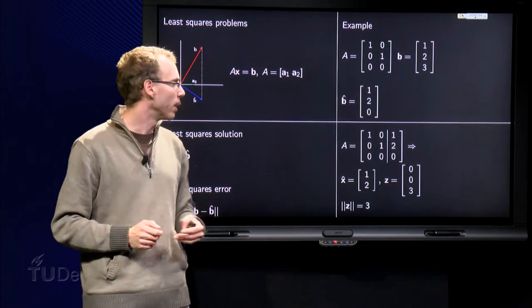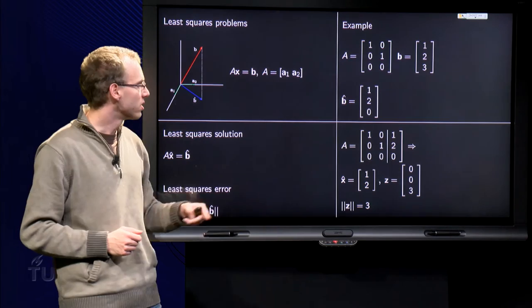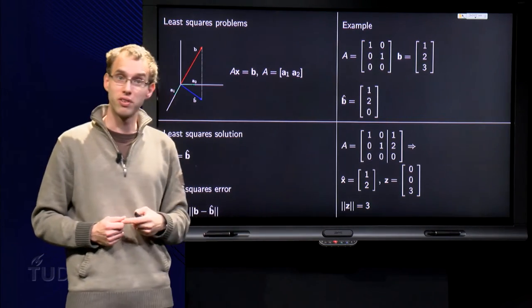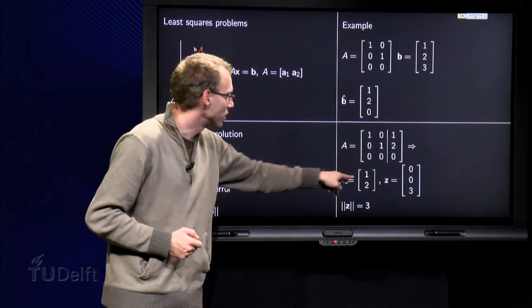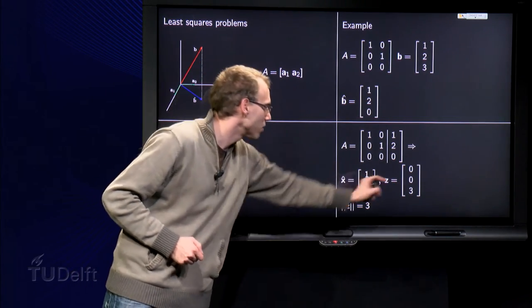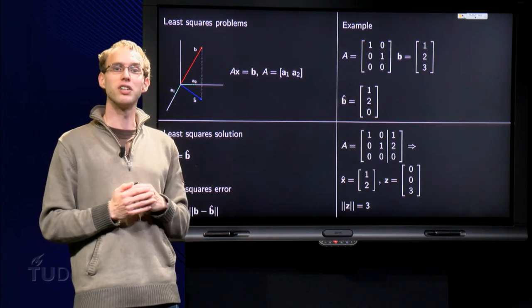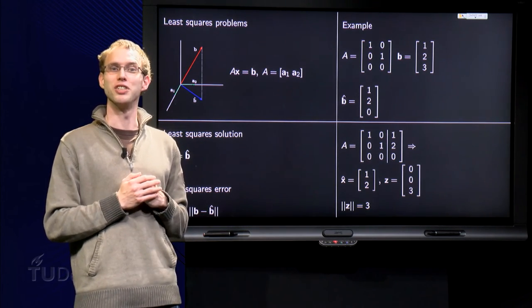The difference between b̂ and b equals [0, 0, 3], so the length of z equals 3. Our least squares solution is [1, 2], and our least squares error is 3. So there we have our first example of how to solve an inconsistent system.